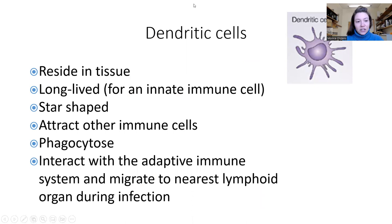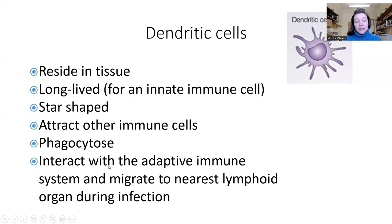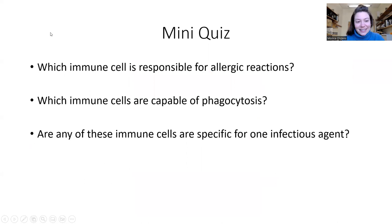Let's talk about dendritic cells. They reside in tissue, they are long-lived — probably the most long-lived innate immune cell. They got their name from their star shape. They're also really good at attracting other immune cells and phagocytosis. They also interact with the adaptive immune system and migrate to the nearest lymph node during an infection.